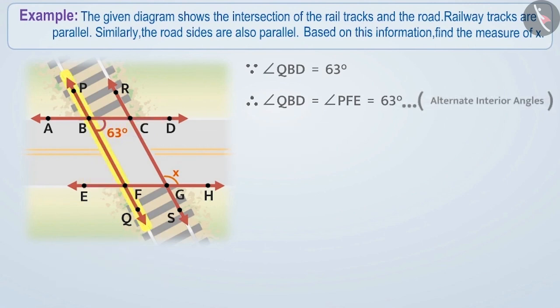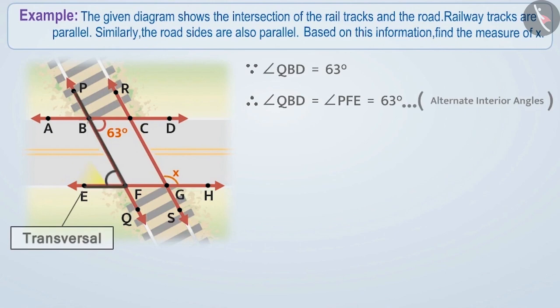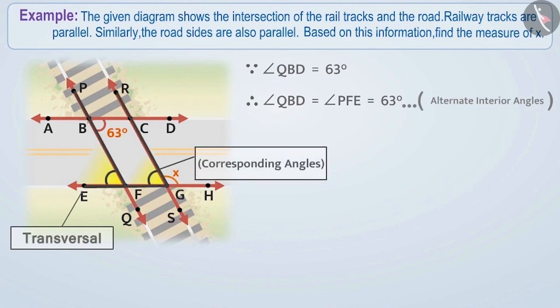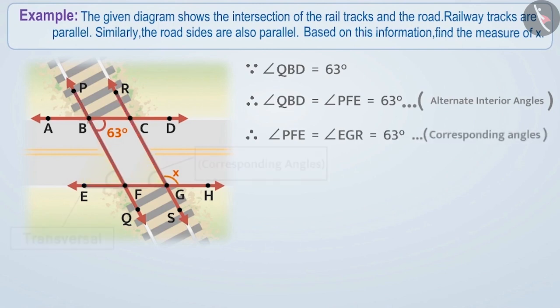Now, line PQ and line RS are also parallel lines and EH is their transversal line. We see that angle PFE and angle EGR are corresponding angles. Since they are corresponding angles formed by the transversal of parallel lines, they are equal. Therefore, angle PFE is equal to angle EGR is equal to 63 degrees.